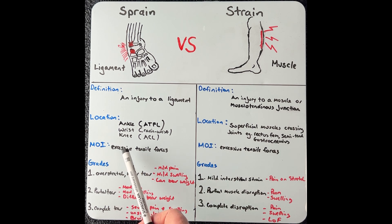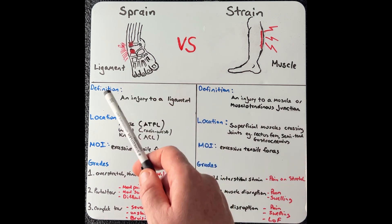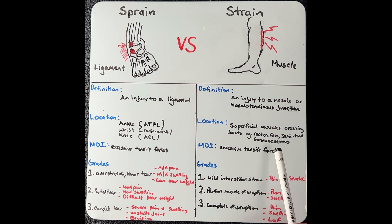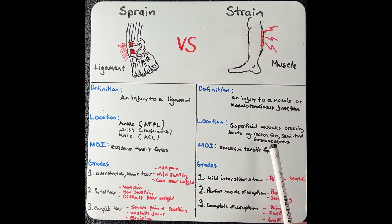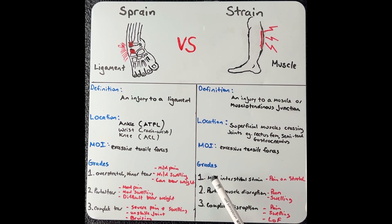The mechanism of injury is essentially the same. We see excessive tensile forces that lead to ligament damage, or in the strain, excessive tensile forces to the muscle, which can lead to a disruption in the myofibers or a complete rupture at the muscle tendon unit. This is essentially what leads to the grading system, which is the same for both: first degree, second degree, or third degree injury.